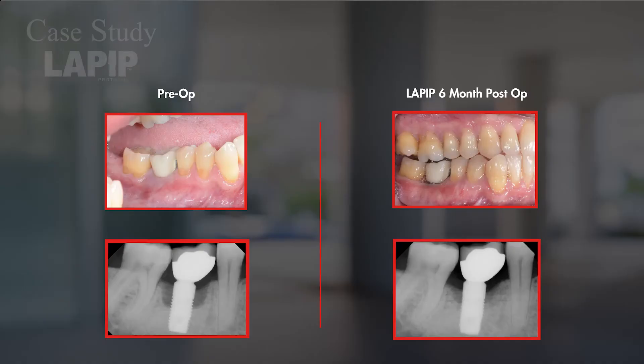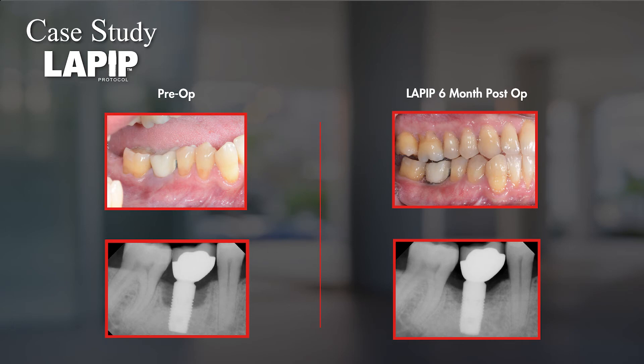When the patient first presented to the office, I would have given that implant a questionable long-term prognosis. Prognosis is a dynamic process that continually moves as treatment is completed and as we continue to monitor the patient throughout the healing process. At this point, we have remarkable bony regeneration around that implant, and the prognosis has improved from questionable to good long-term prognosis. As we continue to monitor the healing, we should see more increased bony regeneration over the next four to six months.